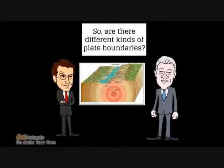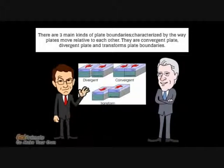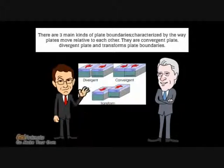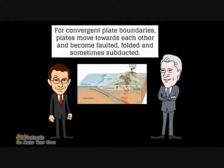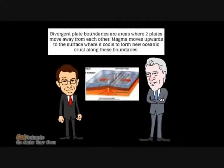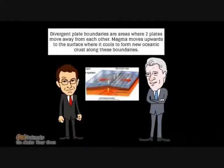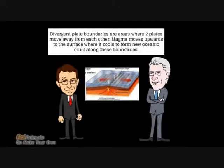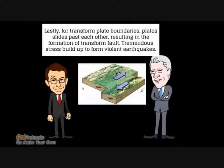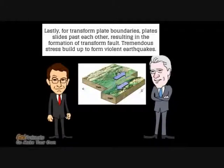Are there different kinds of plate boundaries? There are three main kinds of plate boundaries, characterized by the way plates move relative to each other. They are convergent, divergent, and transform plate boundaries. For convergent plate boundaries, plates move towards each other and become faulted, folded, and sometimes subducted. Divergent plate boundaries are areas where two plates move away from each other; magma moves upwards to the surface where it cools to form new oceanic crust. For transform plate boundaries, plates slide past each other, resulting in the formation of transform faults and tremendous stress that builds up to form violent earthquakes.